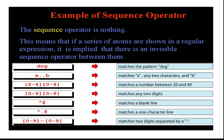The expression 'a..b' matches 'a' followed by any two characters and then 'b'. So 'a' and 'b' are matched, and the two dots indicate there can be any two characters between them. The next example is a regular expression in square brackets '[2-4][0-9]', which matches a number between 20 and 49 — specifically a digit between 2 and 4 followed by a digit between 0 and 9.